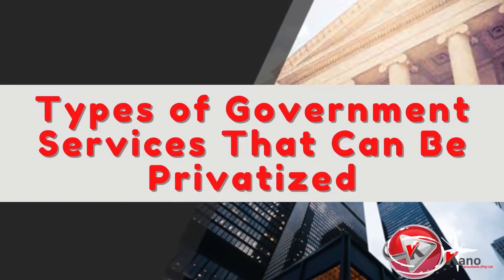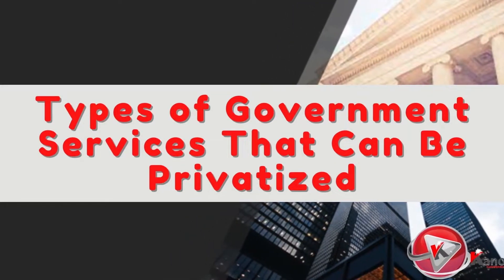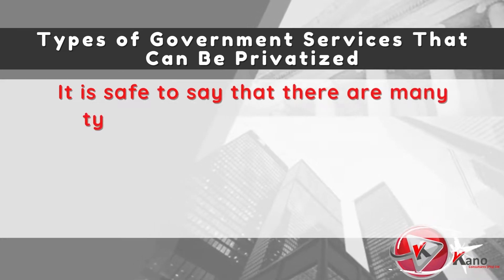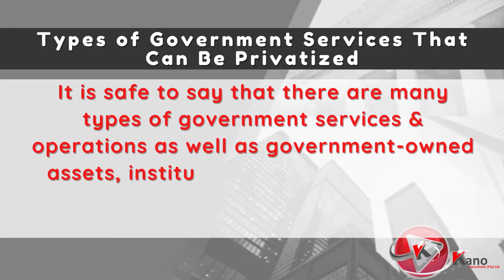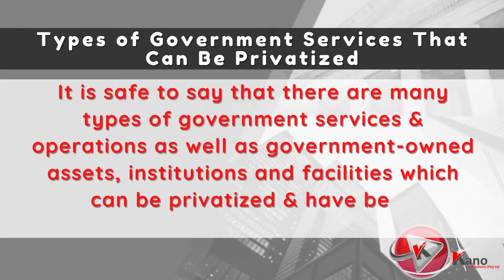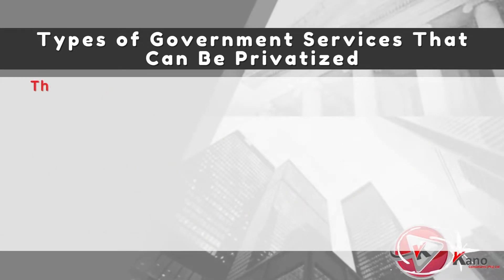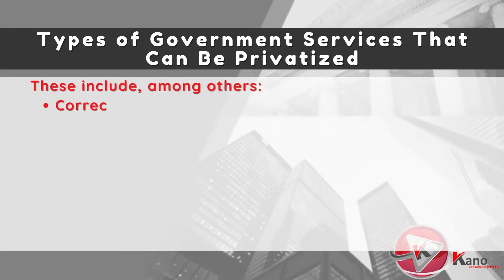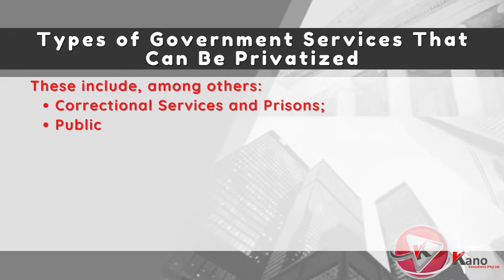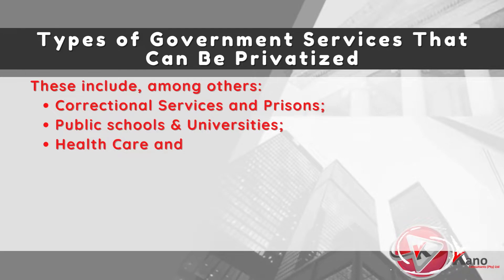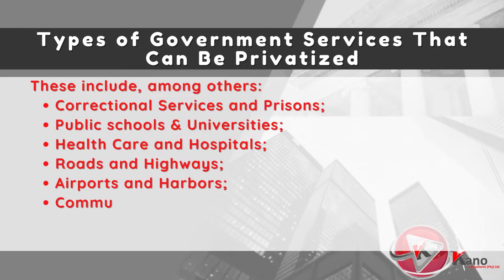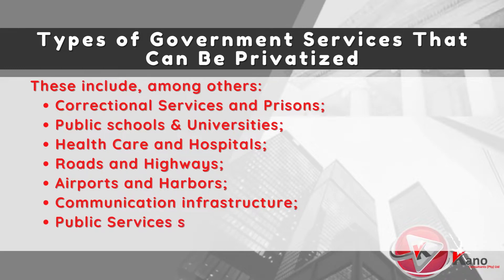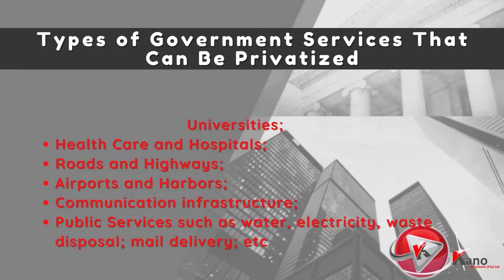So, which types of government assets, services, and operations can be privatized? There are many types of government services and operations, as well as government-owned assets, institutions, and facilities, which can be privatized. These include, but are not limited to: correctional services and prisons, public schools and universities, healthcare and hospitals, roads and highways, airports and harbors, communication infrastructure, and public services such as water, electricity, waste disposal, and mail delivery.